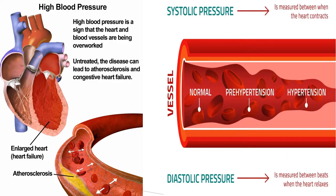This slide has two illustrations of what hypertension does to our body. The picture on the left illustrates how hypertension can affect the heart and arteries. When hypertension is not treated, it can lead to atherosclerosis and congestive heart failure, and the picture on the right illustrates what a normal artery looks like that progresses to hypertension.